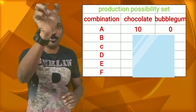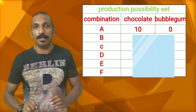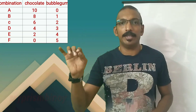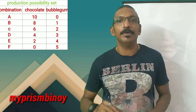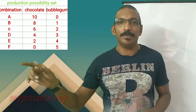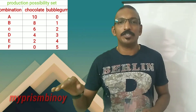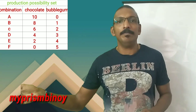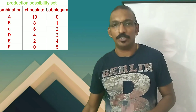Combination A, B, C, D — you can have a number of combinations. Combination A: total chocolate, bubble gum is 0. Combination B: 1 bubble gum and 8 chocolate. Combination C: 2 bubble gum and 6 chocolate. This is the table of combinations.